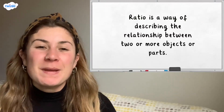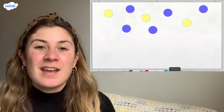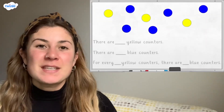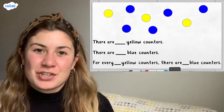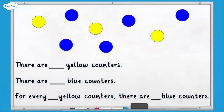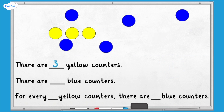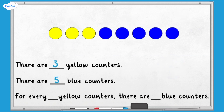Let's begin by looking at these counters and using stem sentences to describe the relationship. How many yellow counters are there? There are three yellow counters. How many blue counters are there? There are five blue counters.